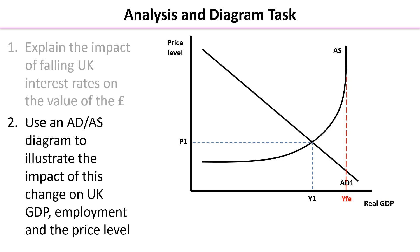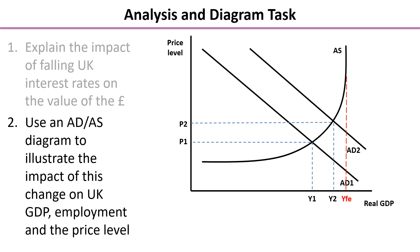Using an aggregate demand/aggregate supply diagram to illustrate the impact on UK GDP, employment and the price level: on the y-axis we have price level and on the x-axis real GDP. We can see a shift to the right of aggregate demand, showing the rise in inflationary pressure between P1 and P2, but also an increase in real output from Y1 to Y2 — more goods and services are being produced — and a rise in employment because more people are required to produce the greater volume of goods and services.